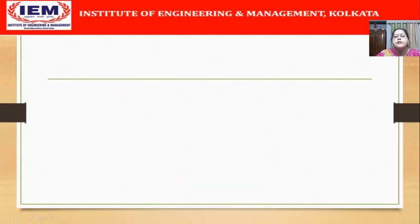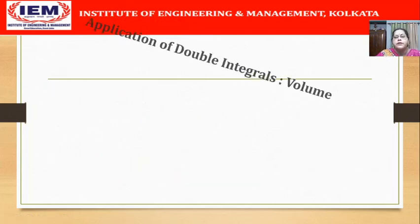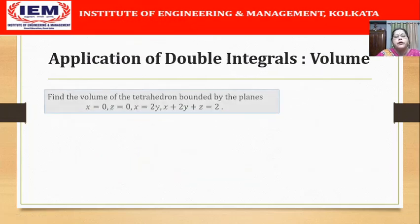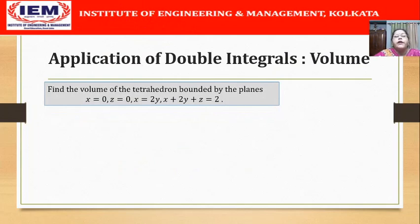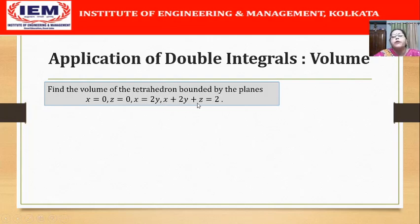Let us start with an example. Find the volume of the tetrahedron bounded by the planes x = 0, z = 0, x = 2y, and x + 2y + z = 2.